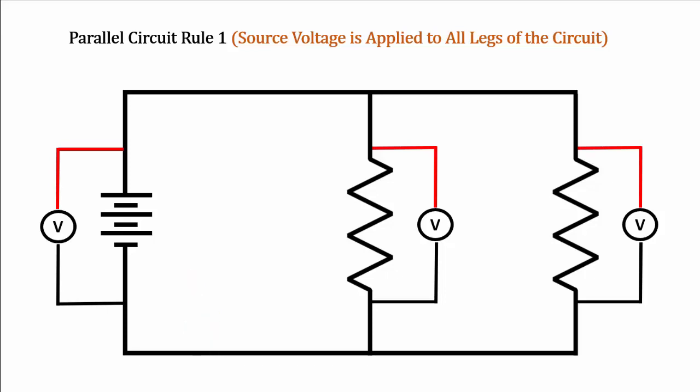But if the fault was in one of the paths, it would only affect that path, if it's an open or a high resistance problem. The key to remember is we use parallel so we can apply the source voltage to all the different branches or legs of the circuit.